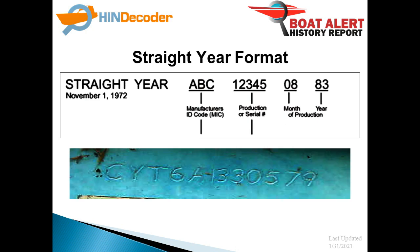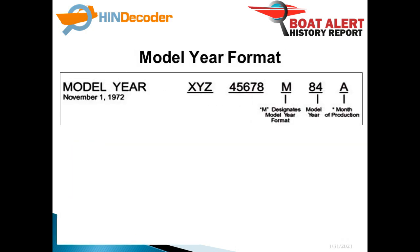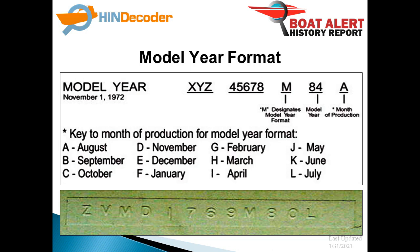On the other hand, the model year format always has the letter M at position 9. It is followed by the year, then a single letter for the month. Here is the legend to show the letter to month conversion. Don't worry, you won't need to memorize these as you can always decode your HIN at hindecoder.com free of charge.